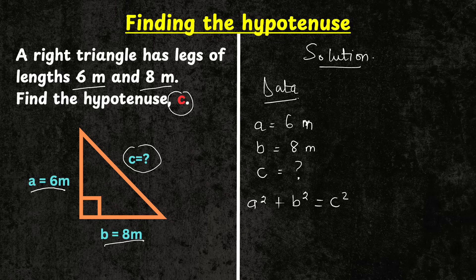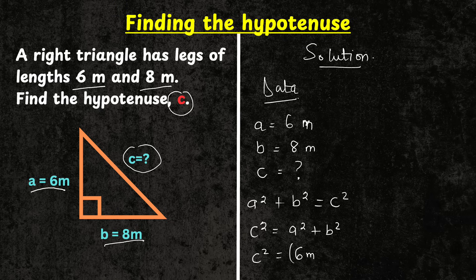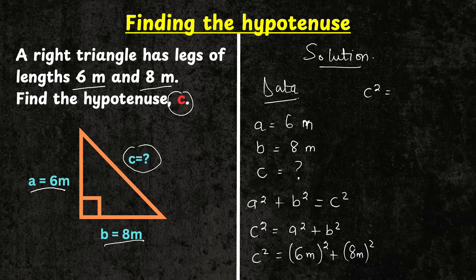Now we can plug in our values and compute for the value of C. Rearranging so that C is on the left hand side: C squared equals A squared plus B squared. So C squared equals six meters all squared plus eight meters all squared. Six squared is 36 and the unit is meters squared, so that gives us 36 meters squared.